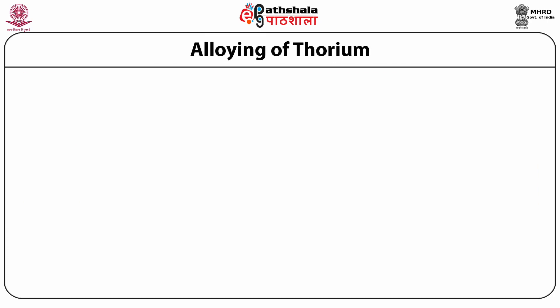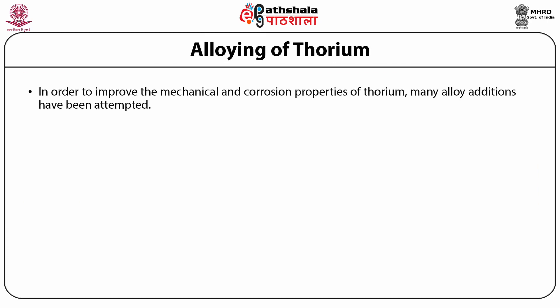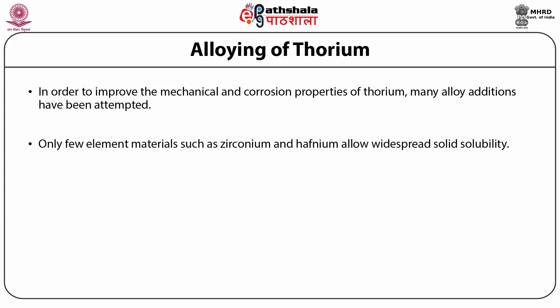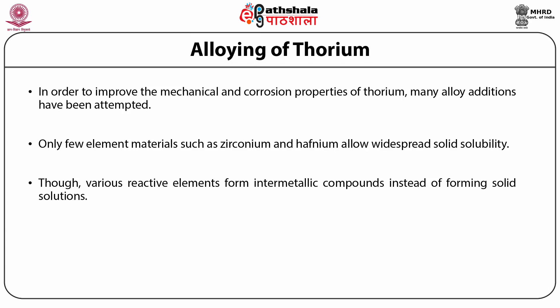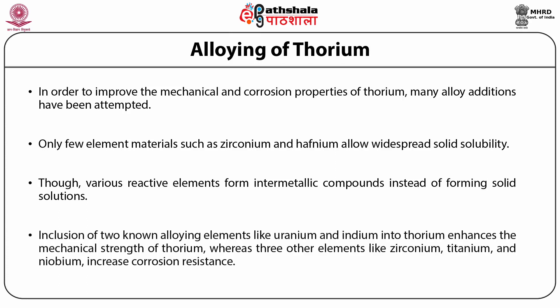Lastly, let us discuss about the alloying of thorium. In order to improve the mechanical and corrosion properties of thorium, many alloy additions have been attempted. Only a few elements such as zirconium and hafnium allow widespread solid solubility, though various reactive elements form intermetallic compounds instead of solid solutions. Inclusion of two known alloying elements like uranium and indium into thorium enhances the mechanical strength of thorium, whereas three other elements like zirconium, titanium and niobium increase corrosion resistance.